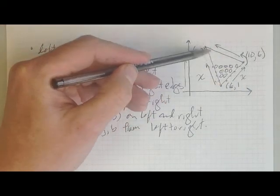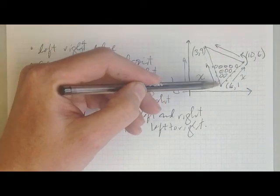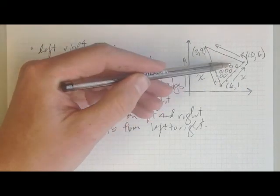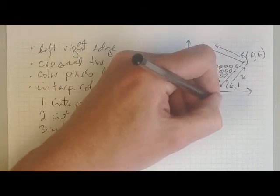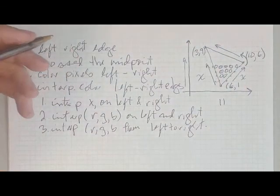So I'm interpolating x on the left and x on the right — that's two values that I'm interpolating.